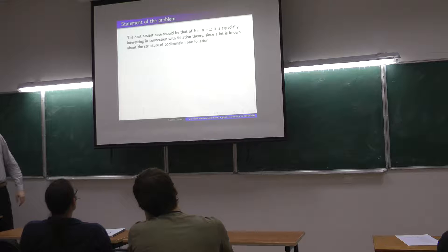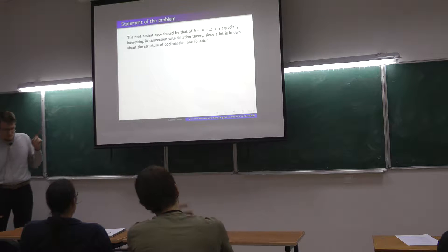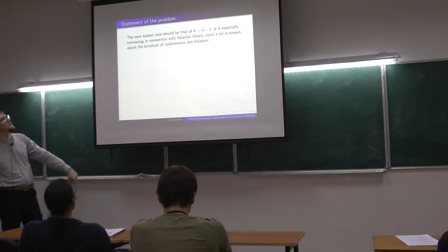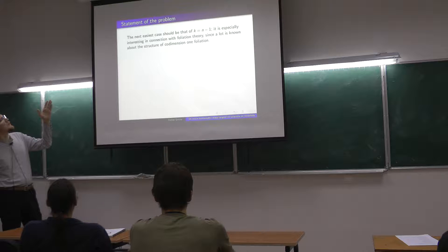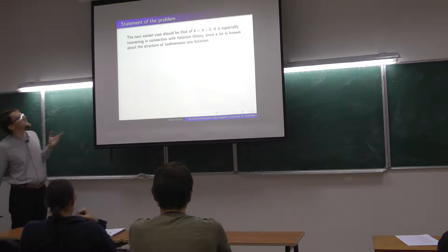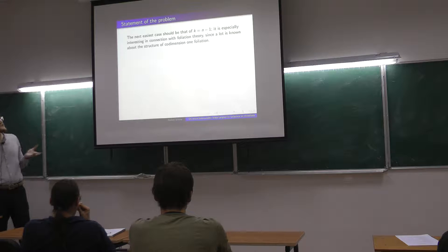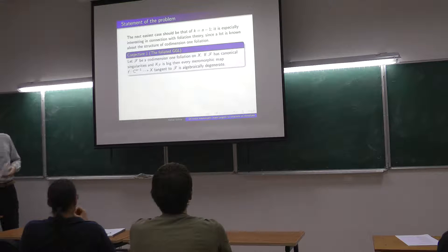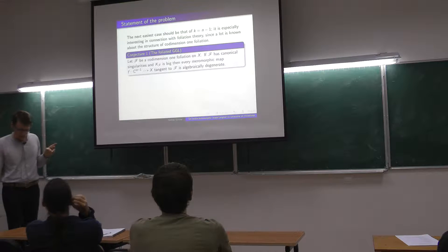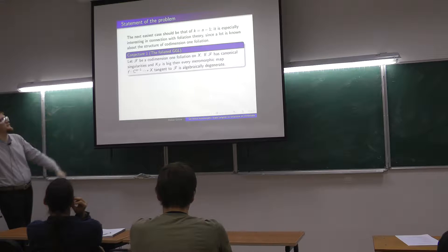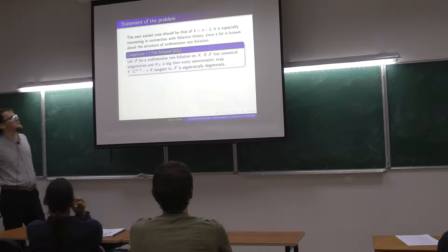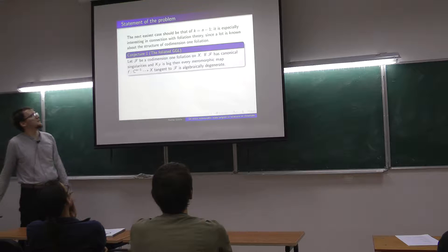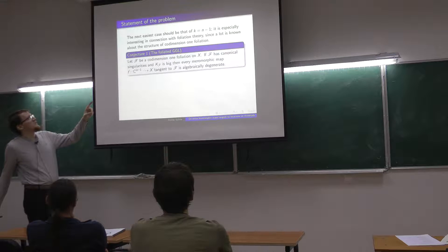Let me formulate the main problem. The case of maps from C^{n−1} is especially interesting in connection with foliation theory, because foliations of codimension 1 are pretty well understood, as opposed to foliations of general rank. We can formulate pretty much the Green-Griffiths-Lang conjecture in the foliated setting: we expect to be able to control algebraic degeneracy of these maps which are tangent to the foliation by the positivity of K_F.